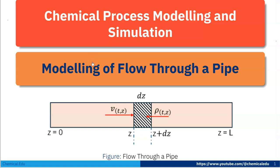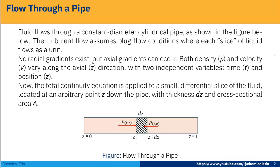Today I will talk about modeling of flow through a pipe. Here fluid flows through a constant diameter cylindrical pipe as shown in the figure below. The turbulent flow assumes plug flow condition where each slice of the liquid flows as a unit.